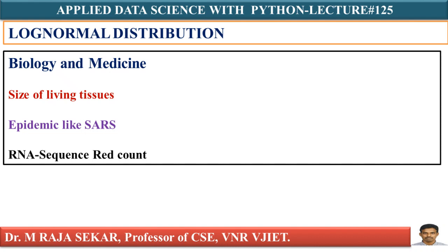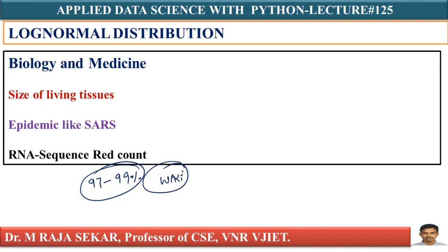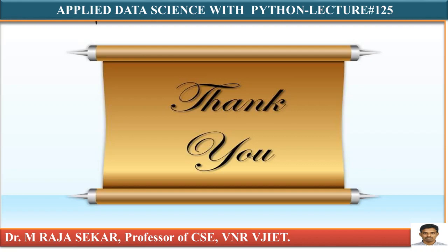There are different domains — social science, demographics, technology, finance, and economics — where log normal distribution applies. In economics, almost 97 to 99% of people's incomes are log normally distributed. I request you to refer to Wikipedia for more applications. In future classes, I will make use of log normal distribution for solving data science problems. Thank you very much.